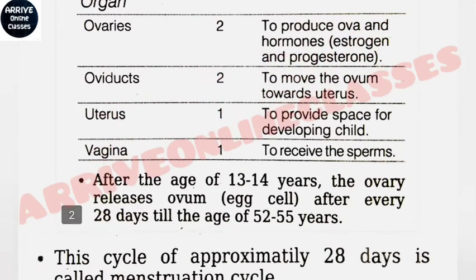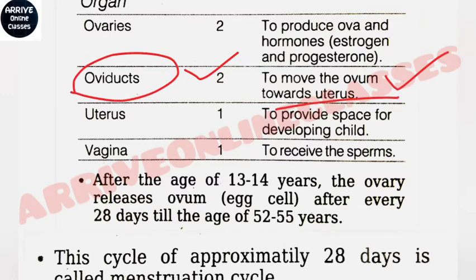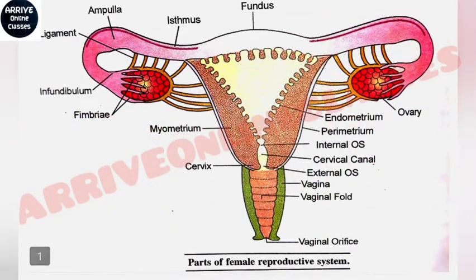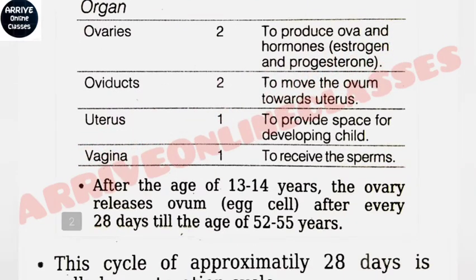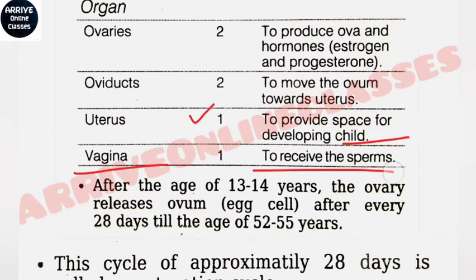The fallopian tube is also called the oviduct. Its function is to move the ovum towards the uterus. The uterus provides space for the developing child — the embryo will be converted into a baby here. The uterus is commonly called the womb. The vagina is the opening of the female reproductive system where sperm cells enter.